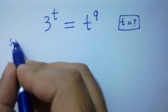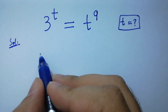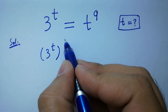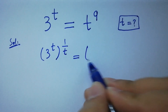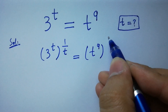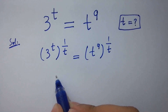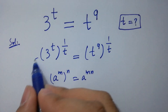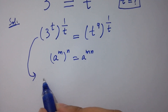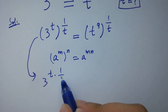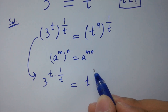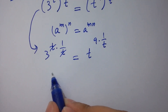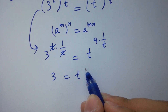Let's have a solution. To solve this, take power 1 over t on both sides. So 3 to the power 1 over t, to the whole power 1 over t, equals t to the power 9, to the whole power 1 over t. Using the rule a to the power m to the whole power n equals a to the power mn, it becomes 3 to the power t times 1 over t, equals t to the power 9 times 1 over t. The t's cancel, giving us 3 equals t to the power 9 over t.